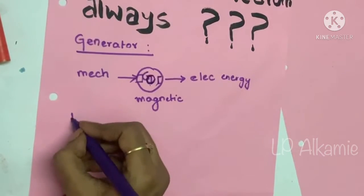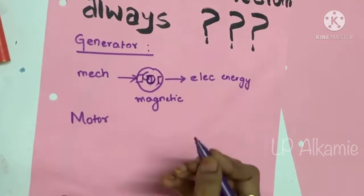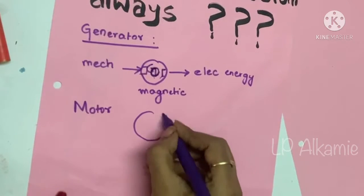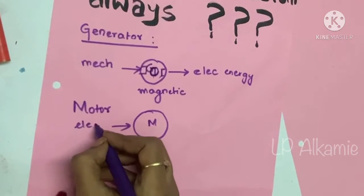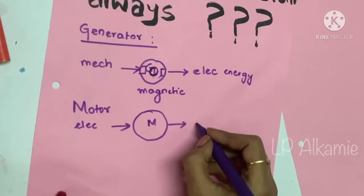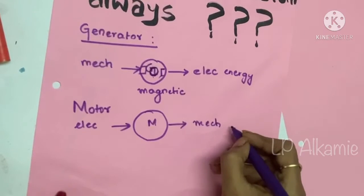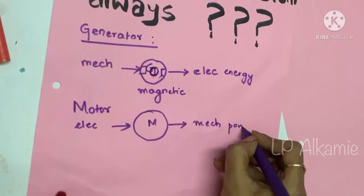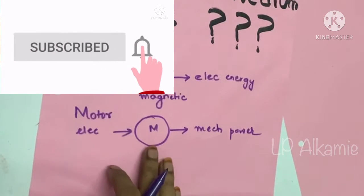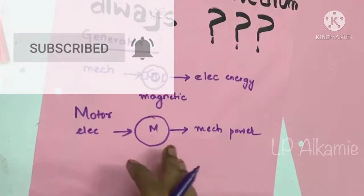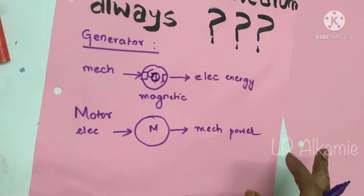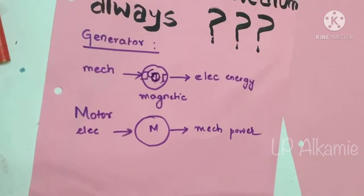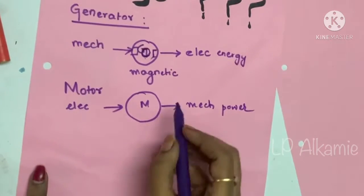Again, if you consider a motor, I am giving power supply electrical and I'm getting output is mechanical power. So here the principle is whenever a current carrying conductor is placed in a magnetic field, then there will be a mechanical force on that conductor. It undergoes some torque. This is the principle of the motor.